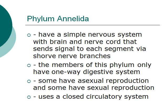The organisms found within this phylum have a simple nervous system with a brain and nerve cord, which sends signals to each segment via short nerve branches. The members of this phylum only have a one-way digestive system. Some organisms have asexual reproduction while others have sexual reproduction. However, most of them use a closed circulatory system.